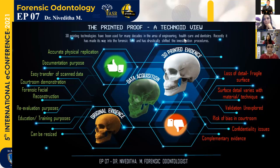From one forensic scientist to another scientist it can be easily transferred. The fourth one is that it can be useful in courtroom demonstrations when ethical considerations for human remains are very crucial, so a model can be used in that case. Then, 3D printing has been used in forensic facial reconstruction for recent years. And it has a very good quality in that you can use it for re-evaluation purposes or for recreating old evidence.